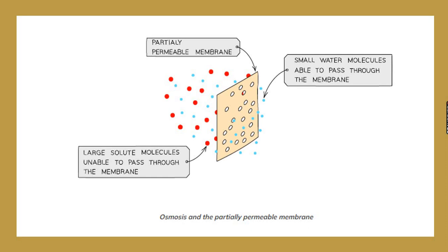Here is an example of a partially permeable membrane. You can see there are some holes in it — only small water molecules are able to pass through, compared to the large solute molecules. This is how a partially permeable membrane works: it allows only small water molecules to pass through, while large solute molecules are restricted.